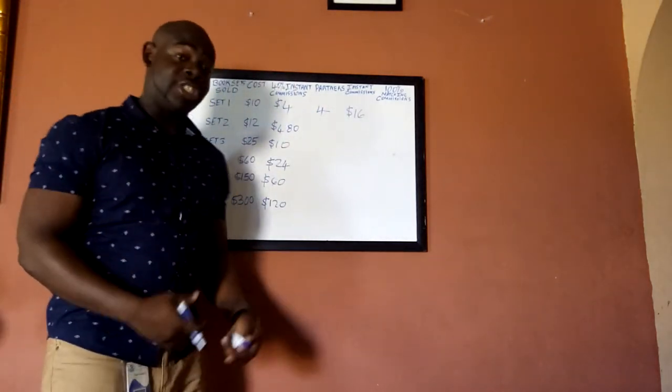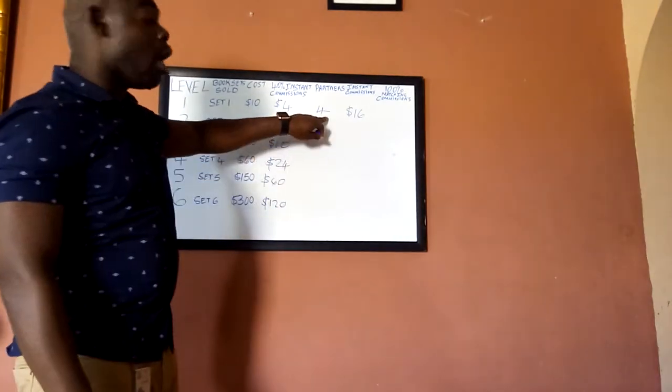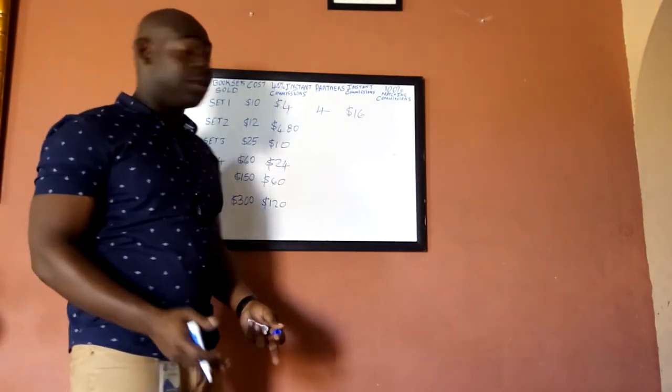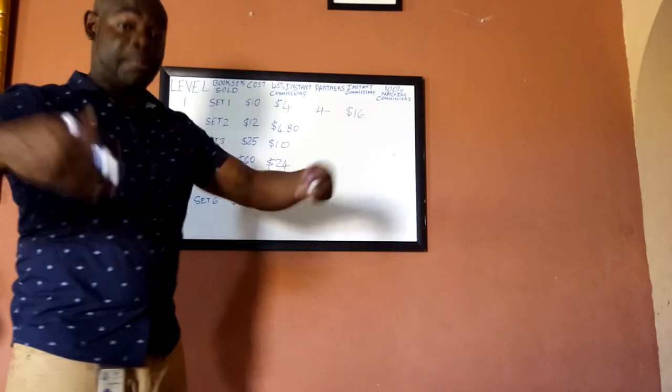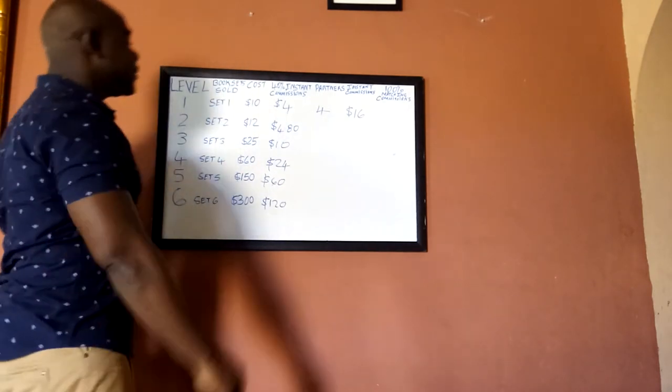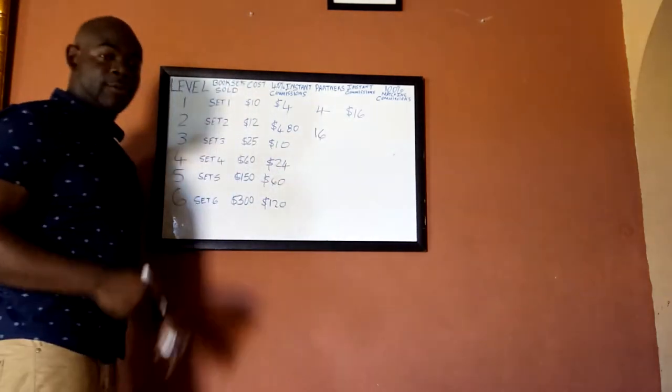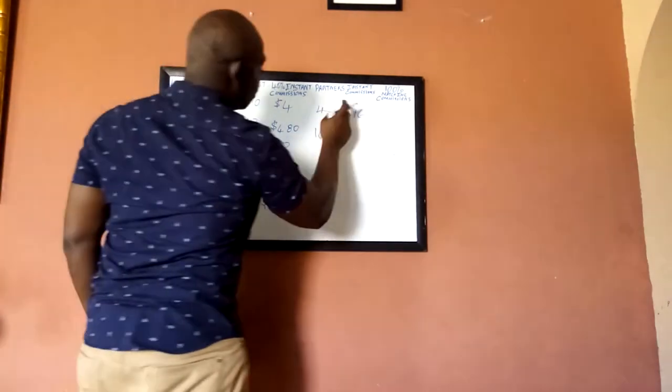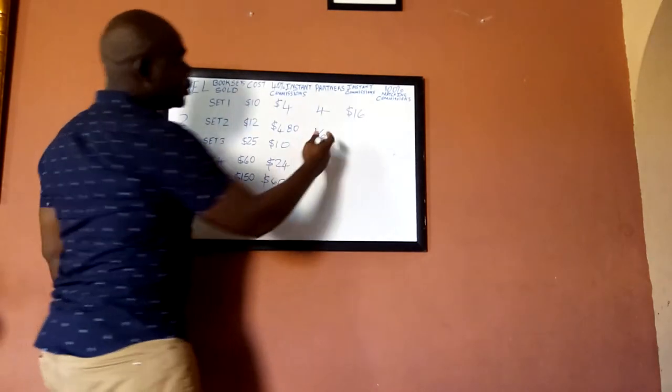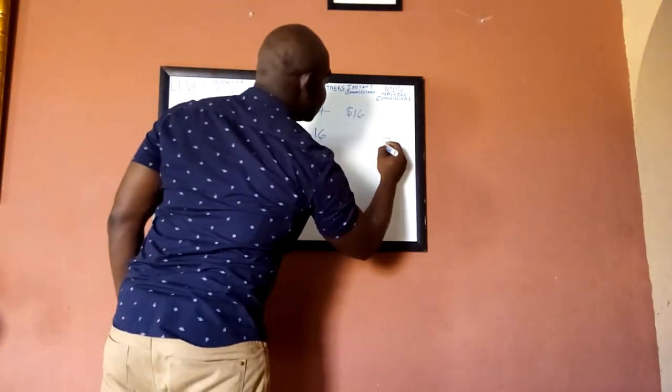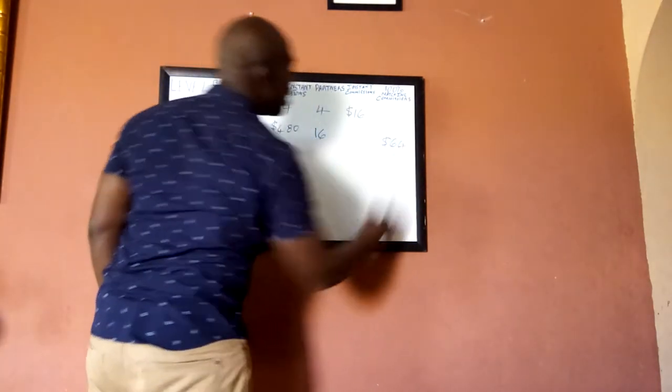Now this company actually encourages teamwork, so it gets you paid a 100% matching commission from the earnings of the people you also invite and coach to the business. So when they duplicate, then four persons getting four, with the 16, they too would earn $16, so you get a 100% matching the 16 of four of them, so you get $64 matching commission.